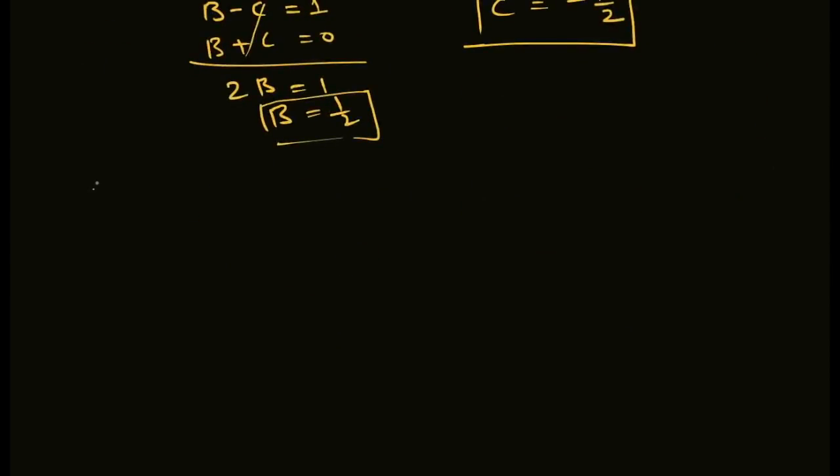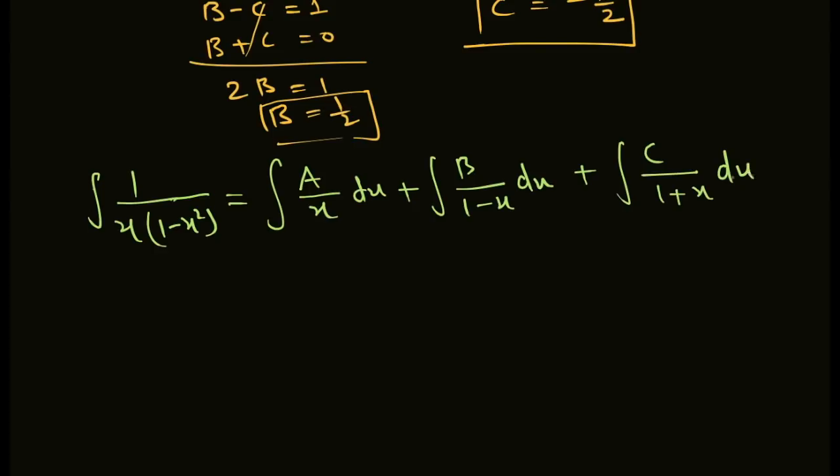Returning to equation 1: integration 1 upon x(1 minus x squared) dx, which we spread by partial fraction as A upon x dx plus B upon (1 minus x) dx plus C upon (1 plus x) dx. Putting values: A equals 1, so 1 upon x dx, and B equals 1 upon 2.